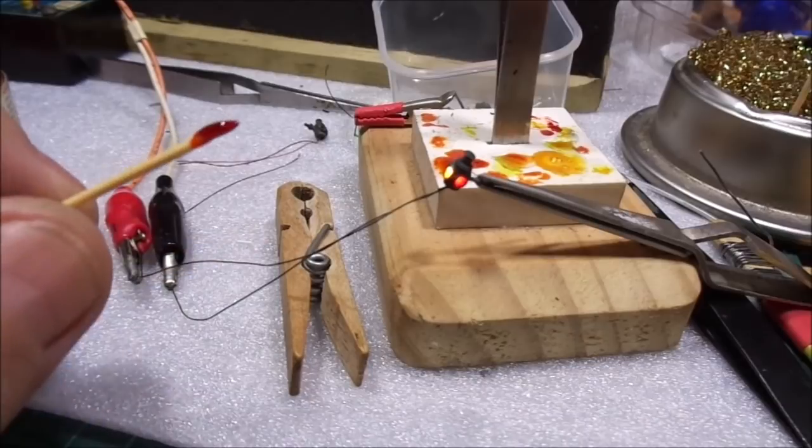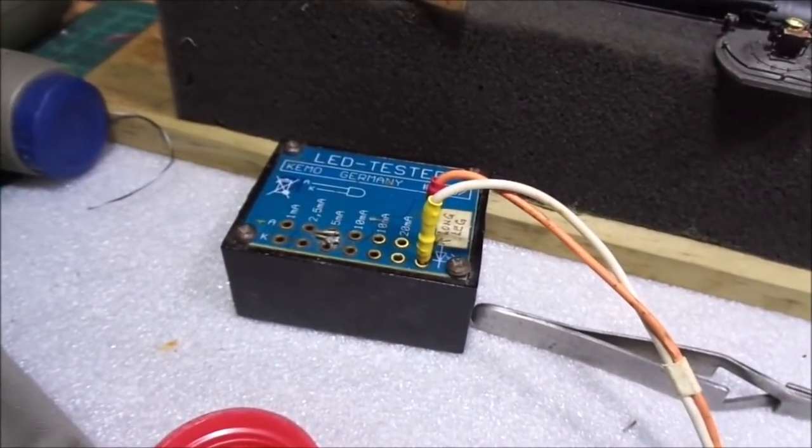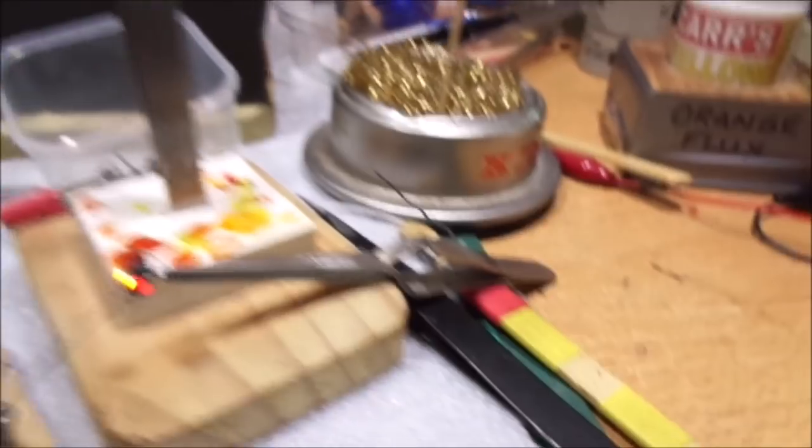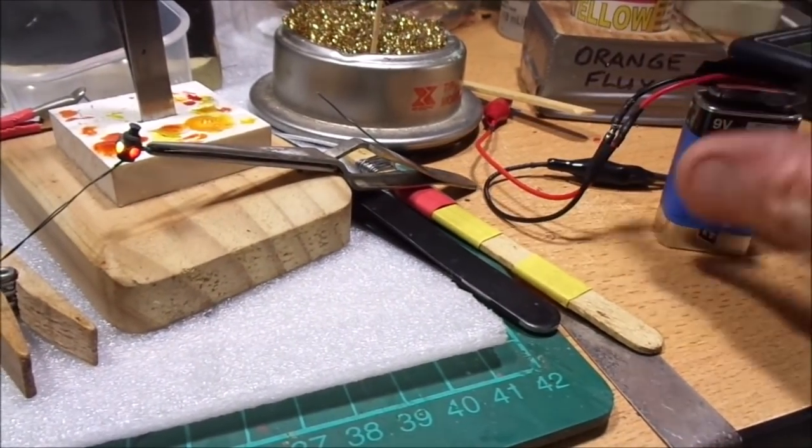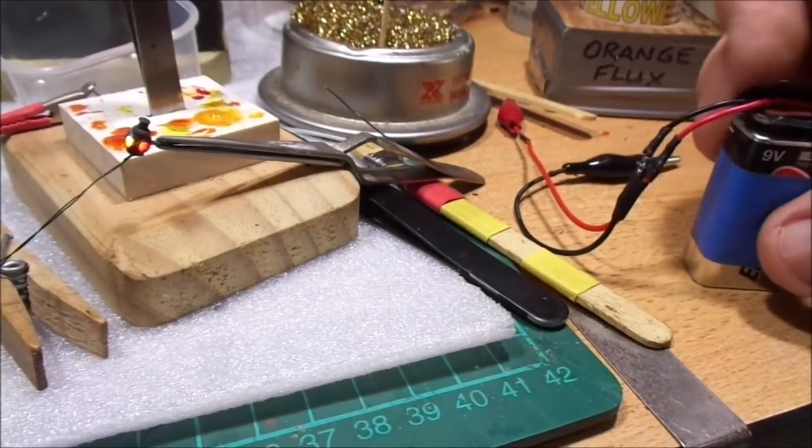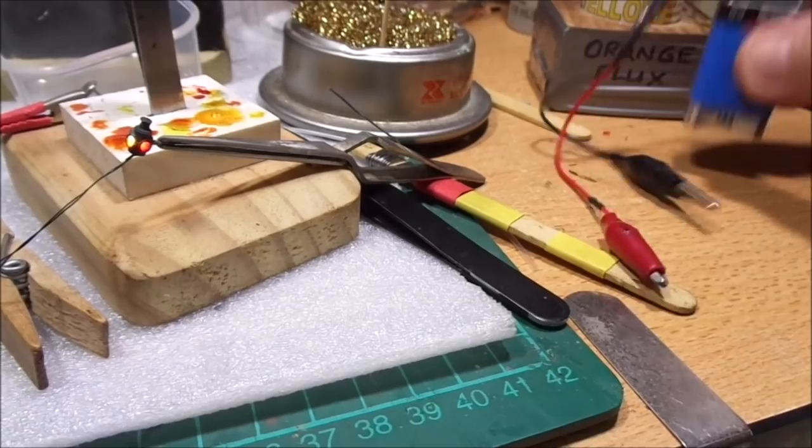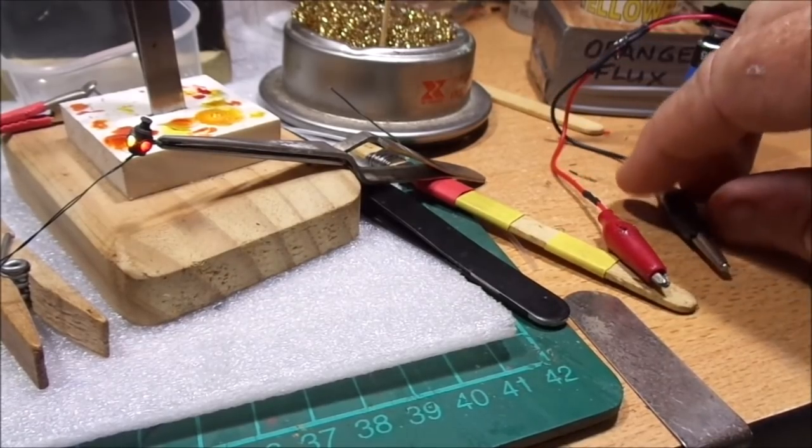And if you don't have an LED tester like I'm using there now, you make your own one up. Just get a 1k or 2k resistor on the negative going out, make a couple of clips up, and you can test your LED.